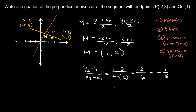The opposite reciprocal means you take the opposite sign — so instead of negative, this slope will be positive. And reciprocal means you flip the fraction, so instead of 1/3 we get 3/1. So the slope of the perpendicular bisector is positive 3.